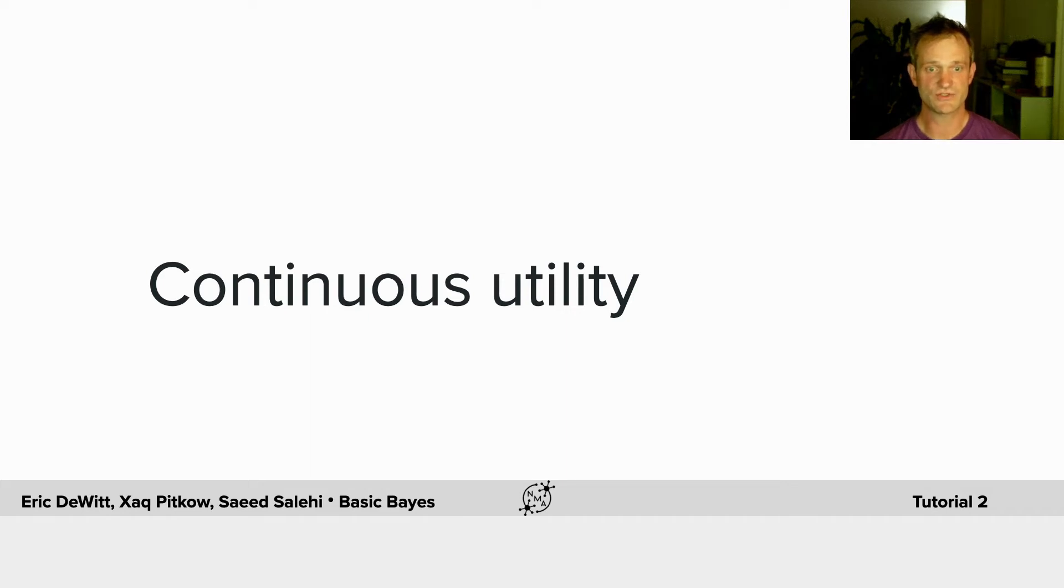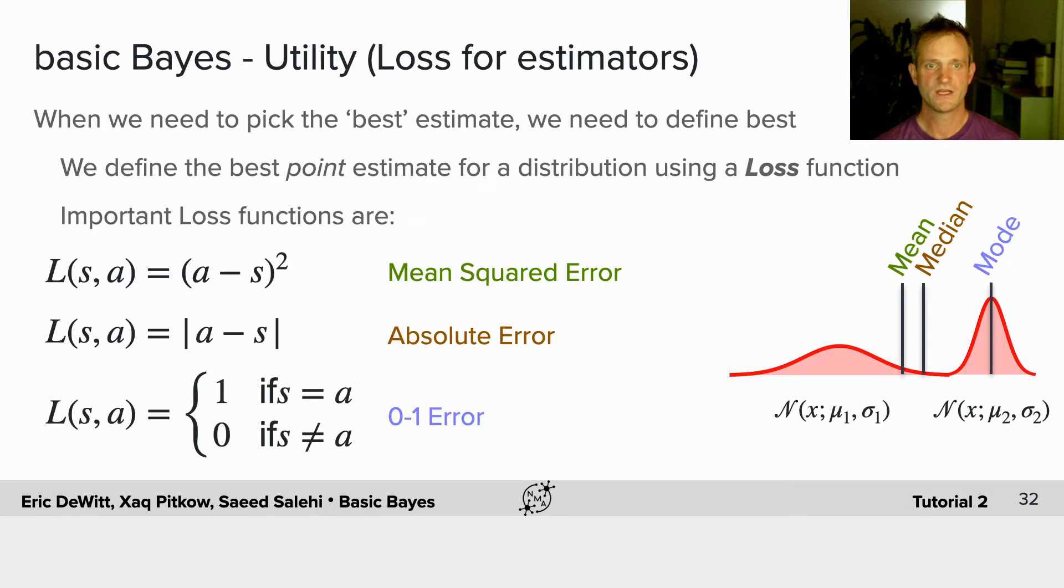Next, we're going to look at continuous utility. Utility, as we saw, is just a way of defining what's good or bad.